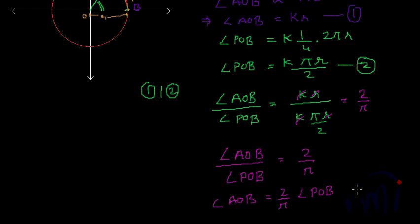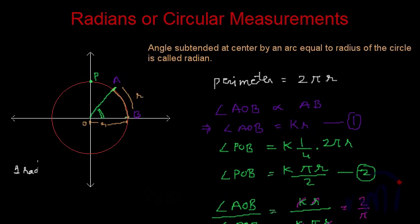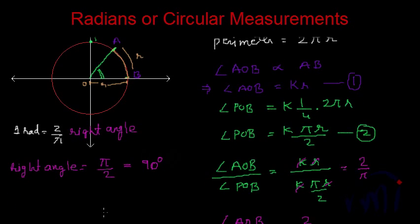That angle is called a radian — whatever radius you take, the angle subtended by the radius at the center of the circle is always a constant, and this is named 1 radian. So 1 radian equals 2/π times a right angle. Therefore, the value of a right angle in radians is π/2, which equals 90 degrees. If 90 degrees equals π/2, then 180 degrees equals π, and 360 degrees equals 2π. This is the relation between degrees and radians.